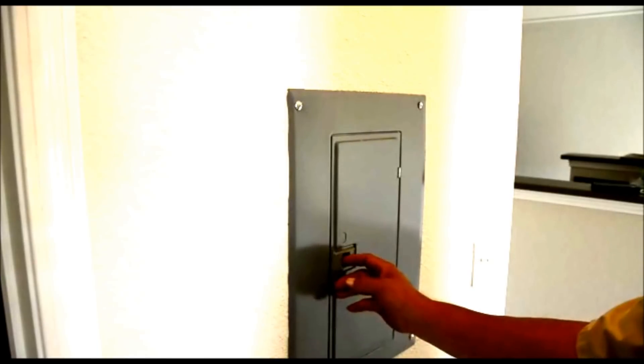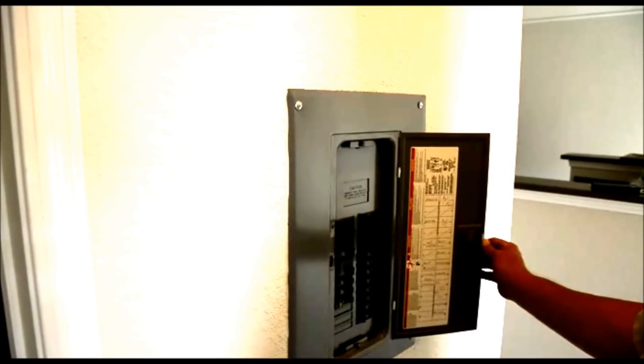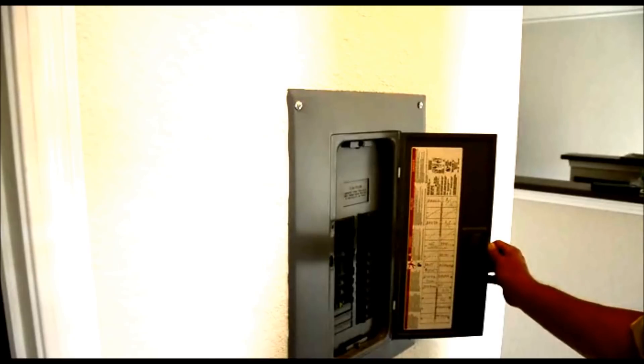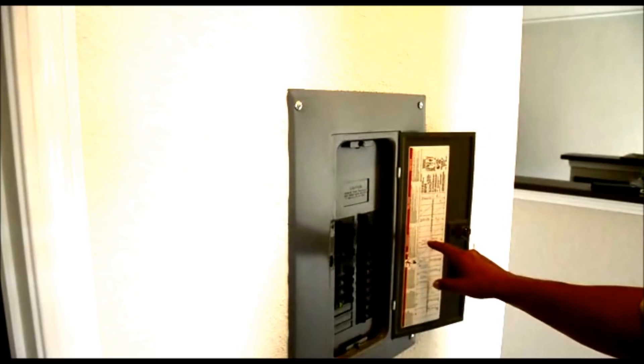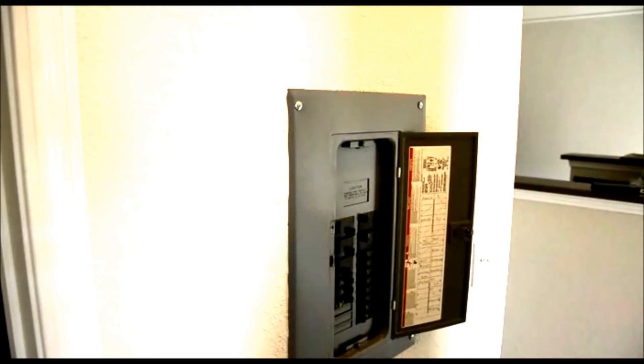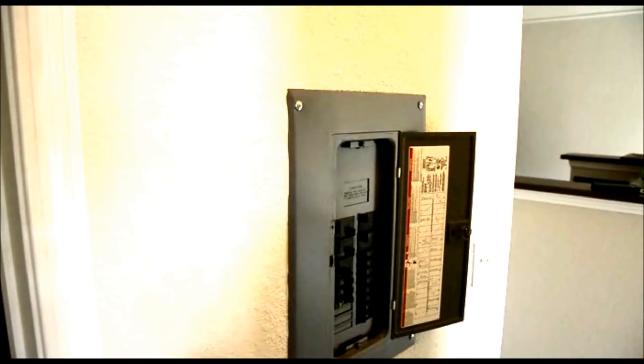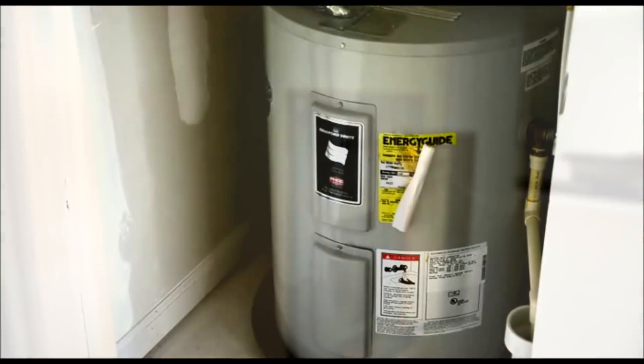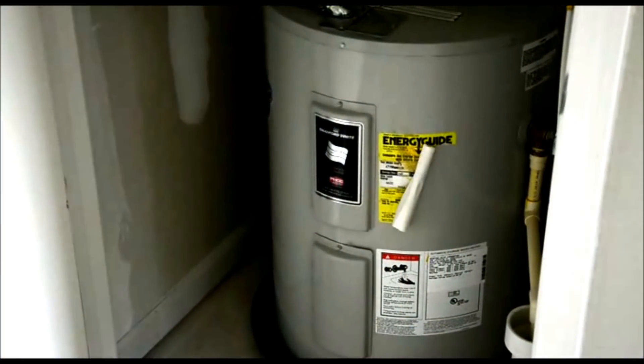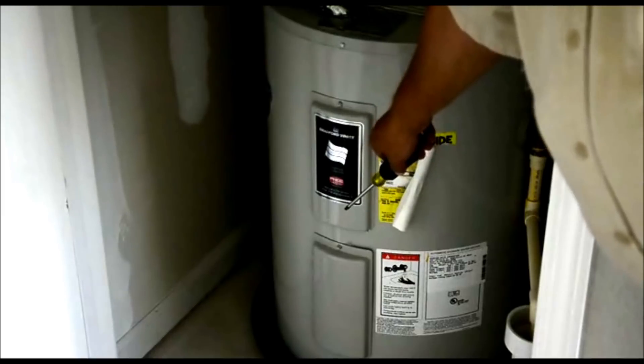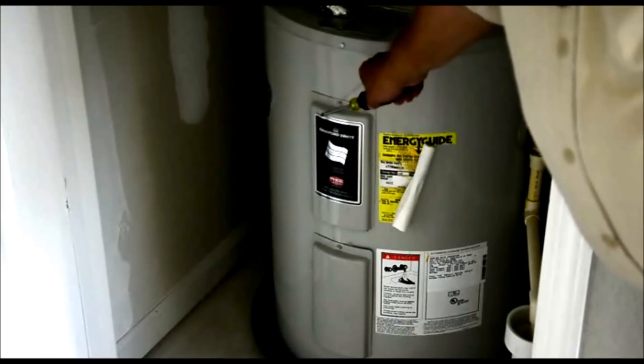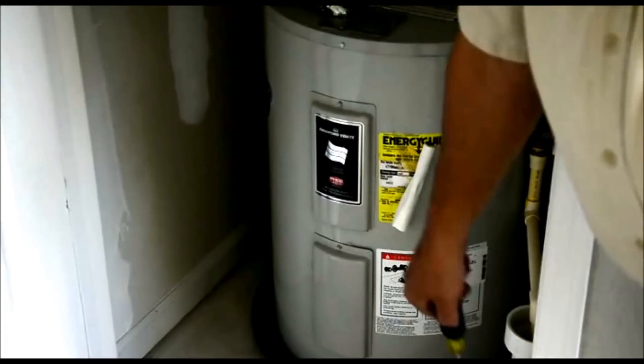Of course the first thing we want to do is to turn the power off to the water heater. That's pretty much the first thing we want to do on any kind of job where you're dealing with electricity. Open your breaker panel, identify which breaker controls that hot water heater. This one we can see is 6, so it'll be this one and we'll shut that down. Now that we've got the power turned off to the water heater, what we're going to do now is we're going to take off the upper panel and the lower panel and we will then test the voltage.